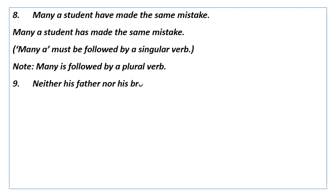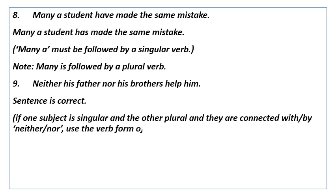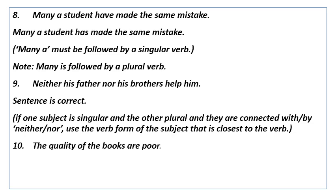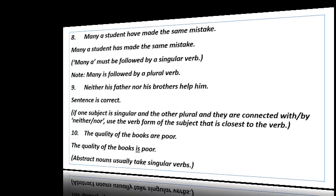No. 9: Neither his father nor his brothers help him. Answer is, this sentence is correct. Reason: if one subject is singular and the other plural and they are connected with by neither/nor, use the verb form of the subject that is closest or nearest to the verb. No. 10: The quality of the books are poor. Answer is, the quality of the books is poor. Reason is, abstract nouns usually take singular verbs.